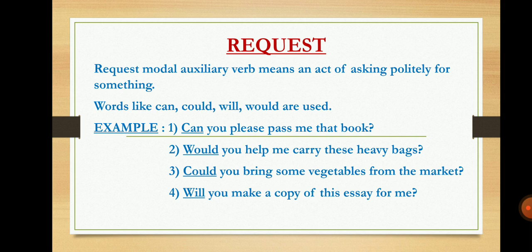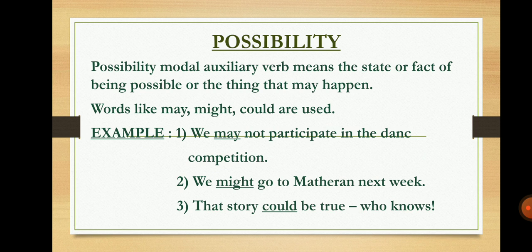The fourth type is possibility. Possibility modal auxiliary verb means the state or fact of being possible, or a thing that may happen. Words like may, might, and could are used. For example: 'We may not participate in the dance competition' — 'may' shows possibility; we may participate, or we may not. 'We might go to Matheran next week' — this shows we might go or might not go. When we are confused about a decision, that shows possibility.